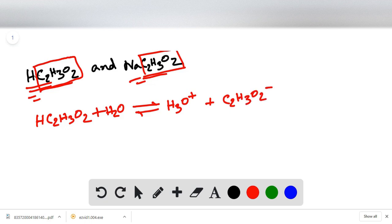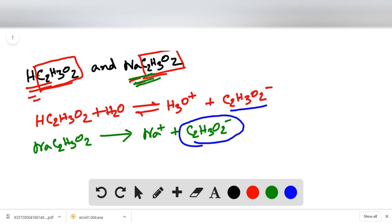But when we have this electrolyte present in the mixture or in the solution, this electrolyte will also dissociate. NaC2H3O2 will dissociate to give sodium ion Na+ and C2H3O2-. From here we can see that we are having this ion from both the acid and this electrolyte.